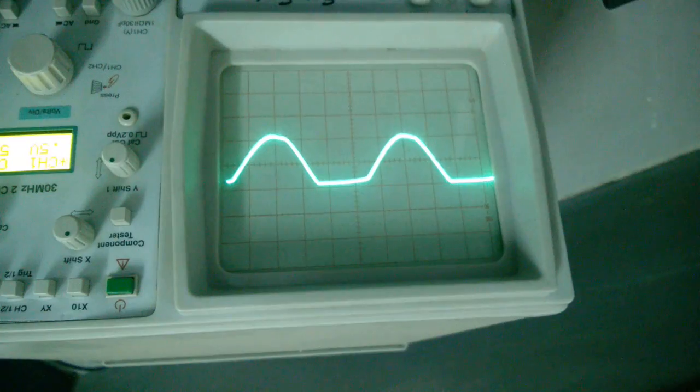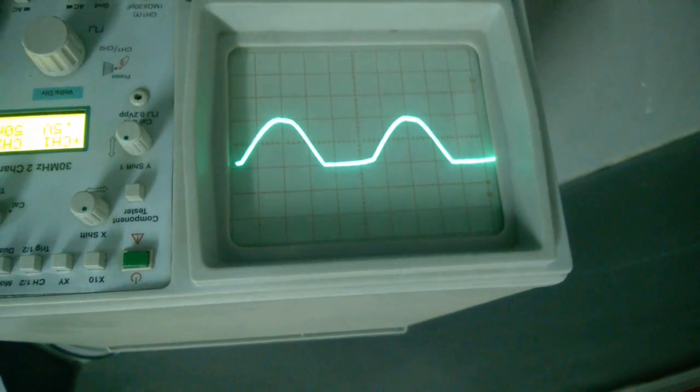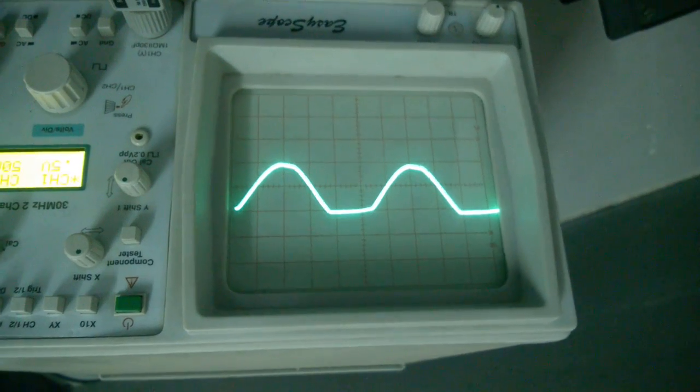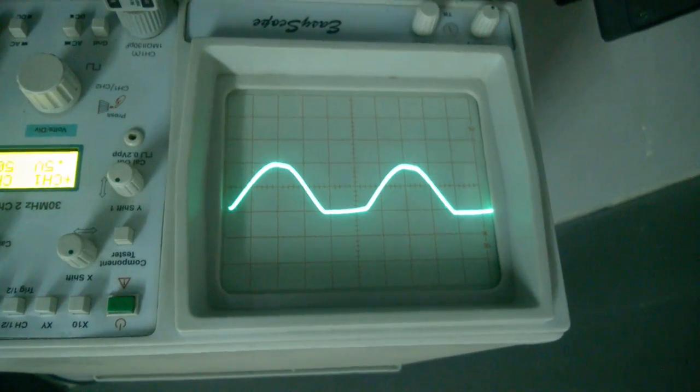Now, see the output. This is the bias series positive clipper which gives the output according to the battery voltage.